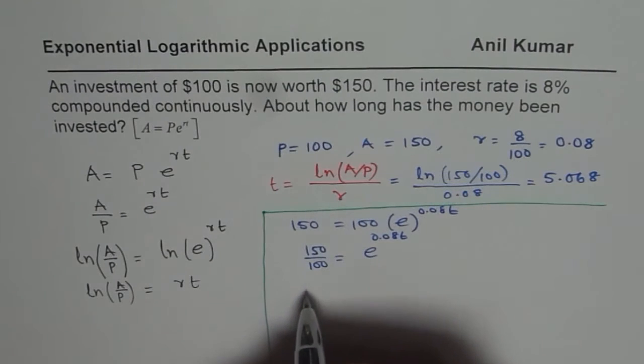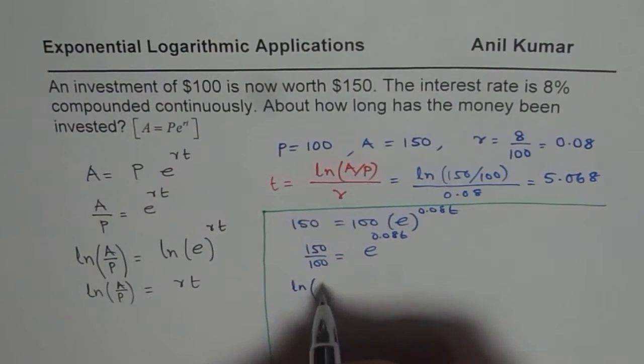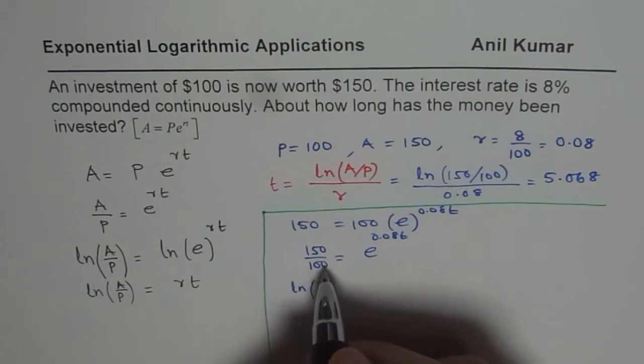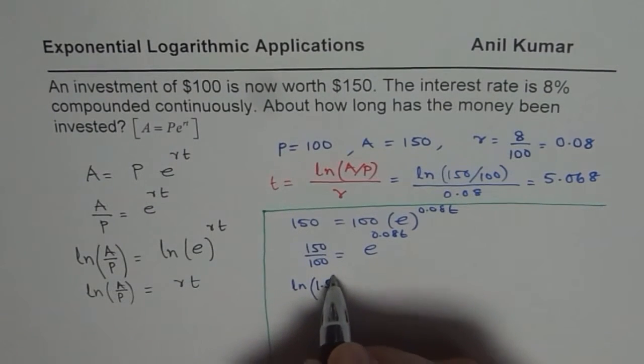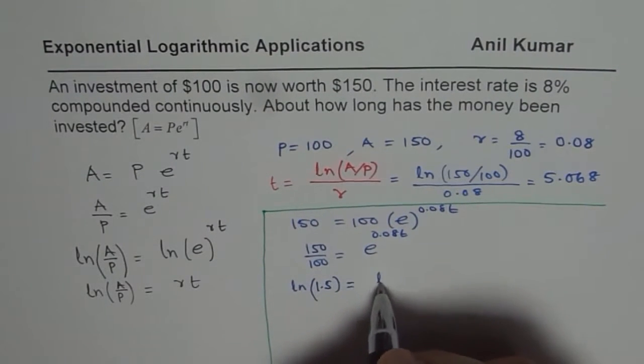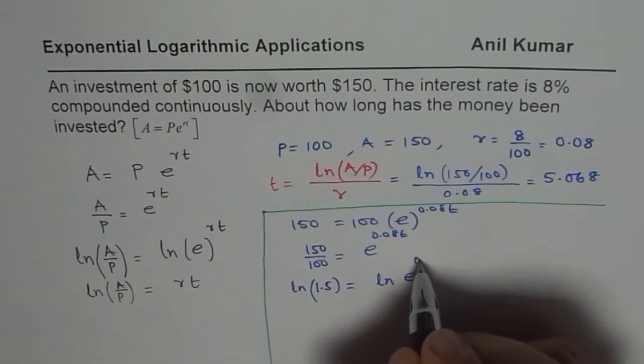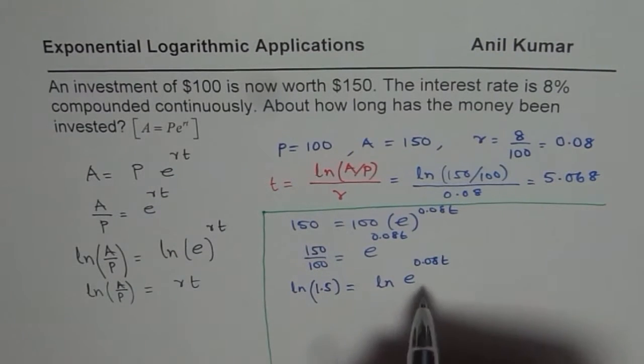Now we'll take log, and so we say ln. I'm purposely not dividing. You could do. You could write 1.5. Is it okay? And here we have ln e to the power of 0.08 T.